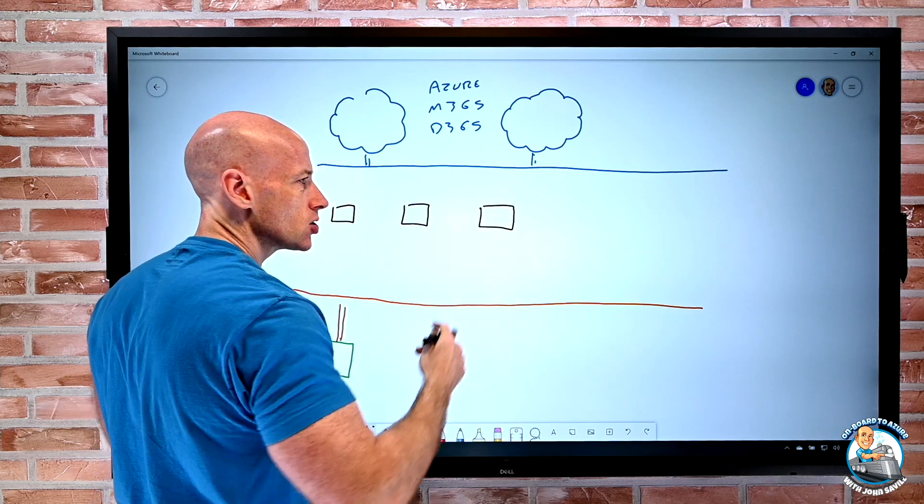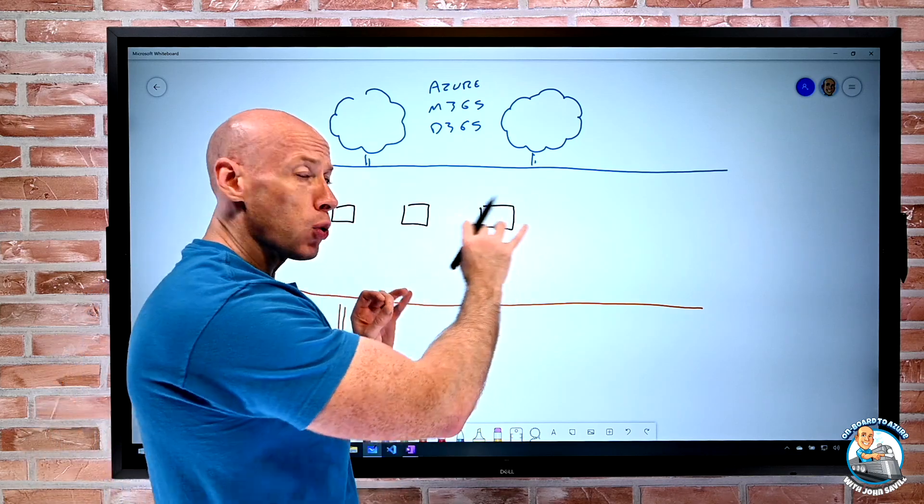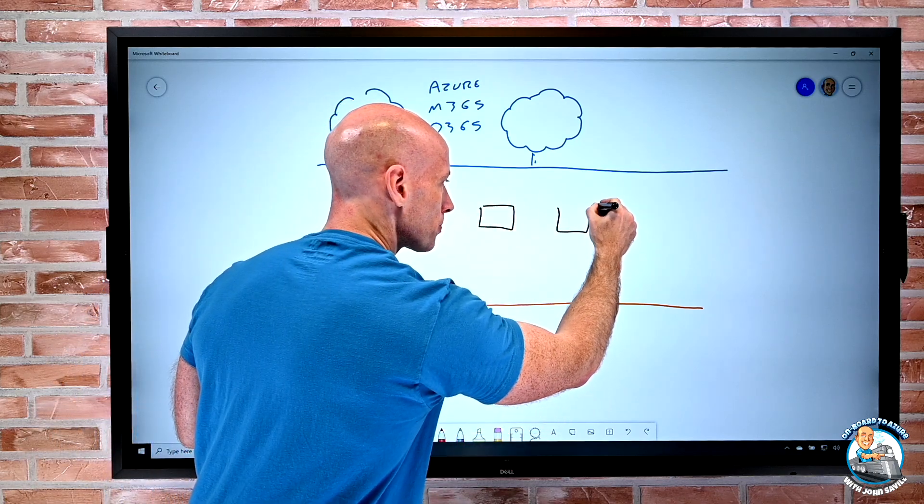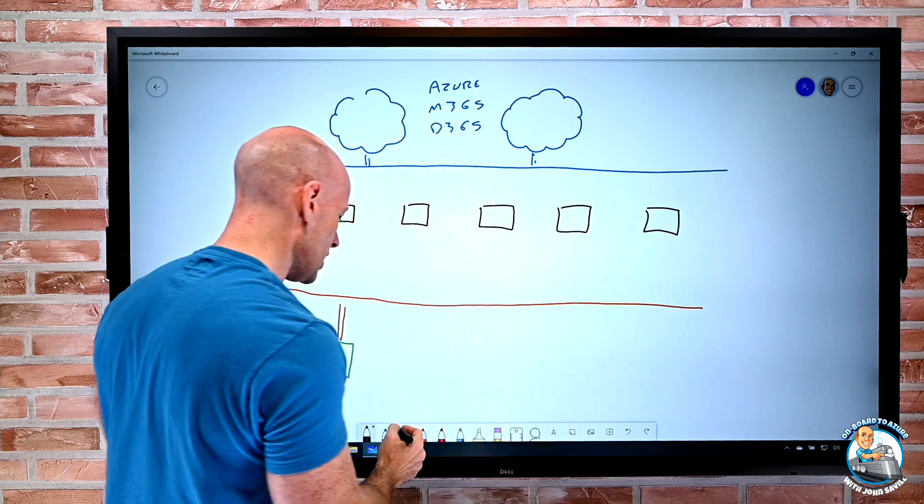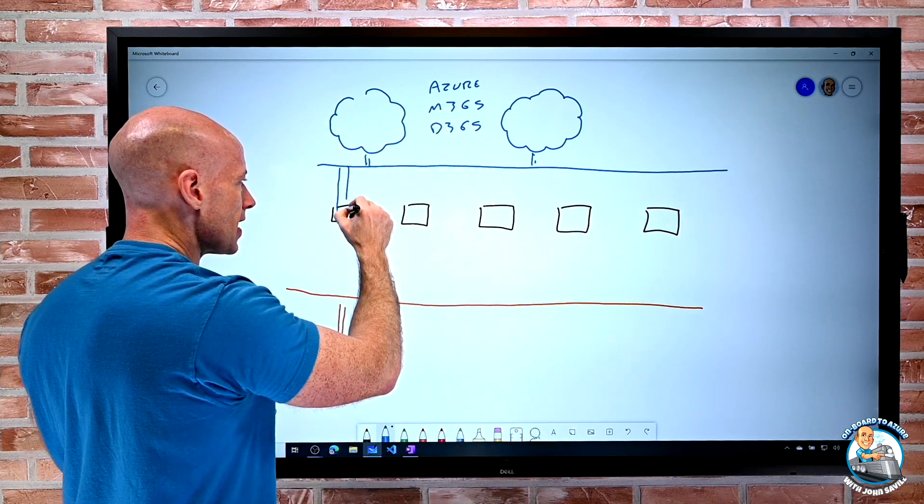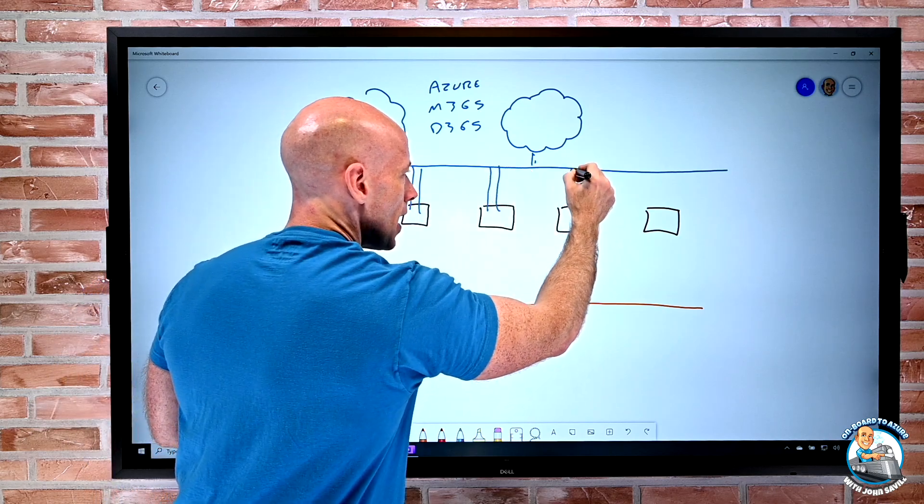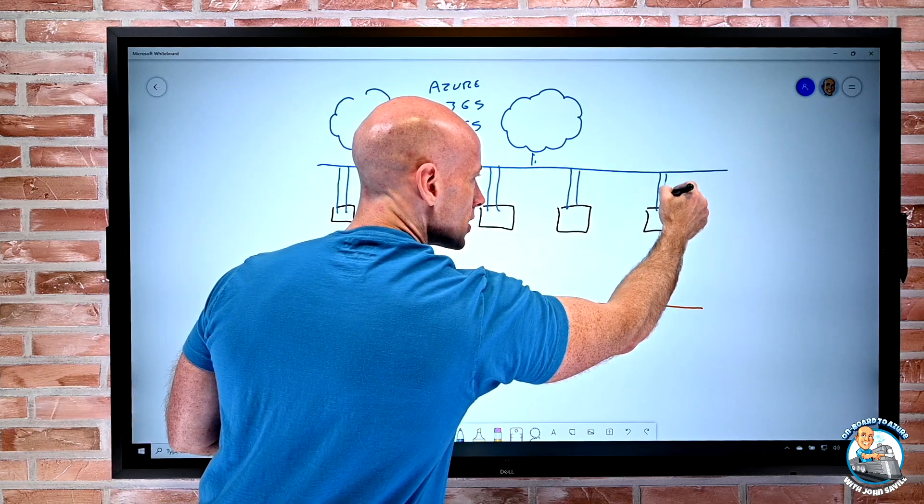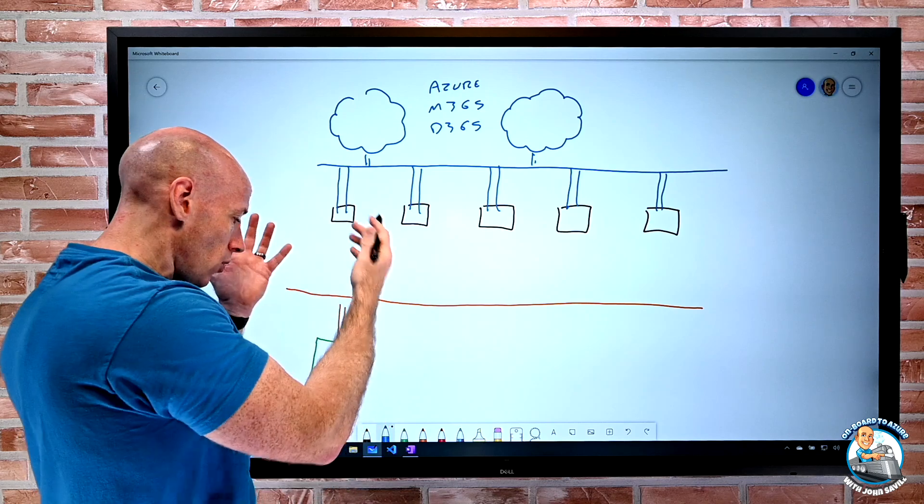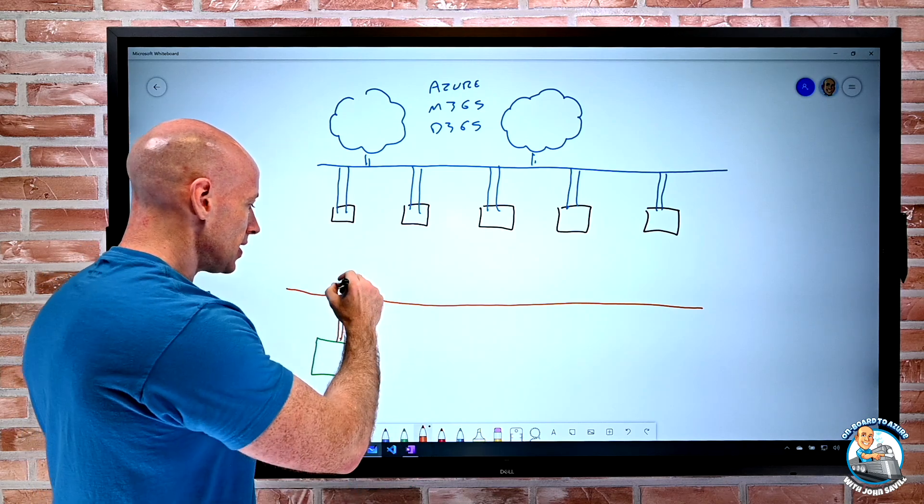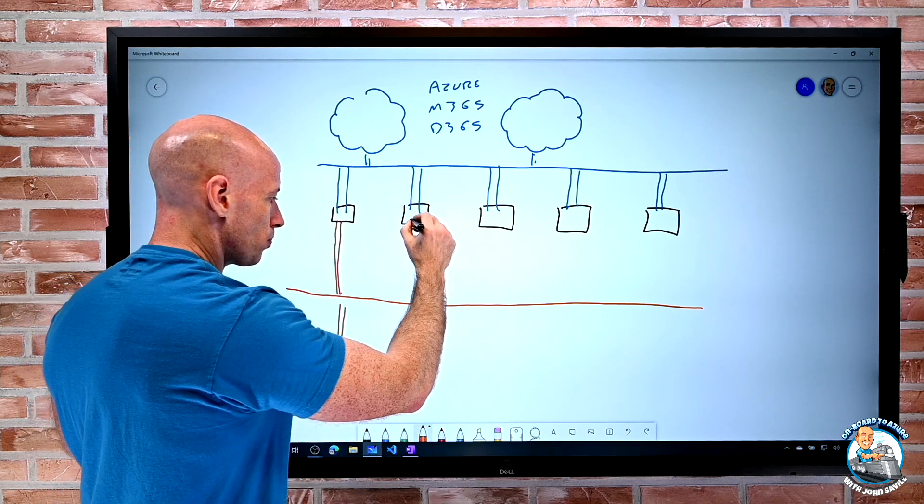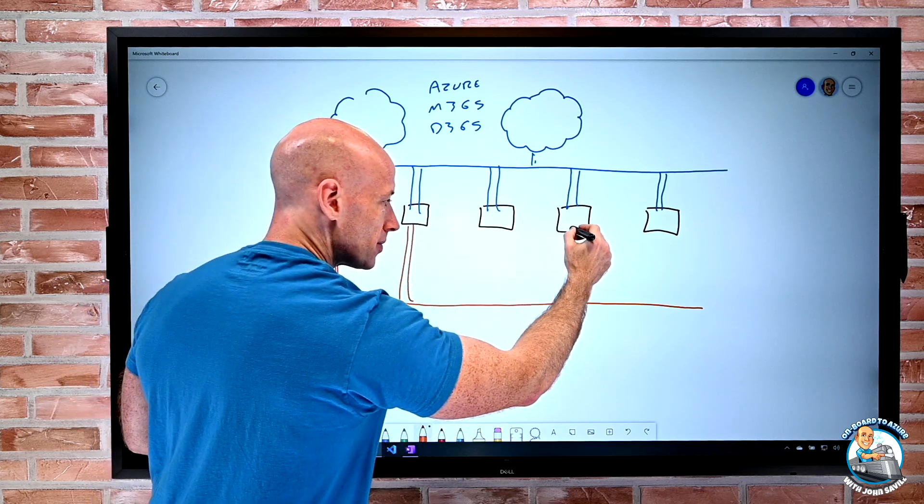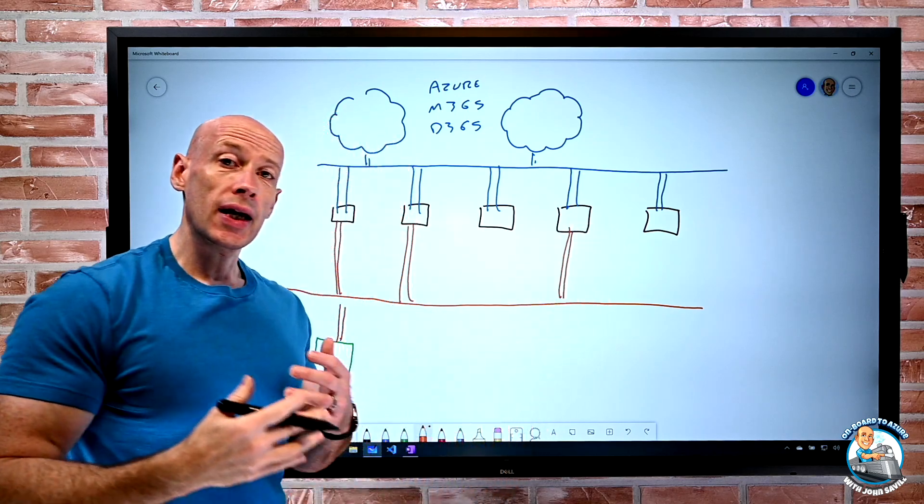So Azure connects to hundreds of these edge, these points of presence locations where essentially Azure extends its network into. And then what happens is the various ISPs also go and have connectivity into these various points of presence, maybe not all of them, some of them it will go and connect to.